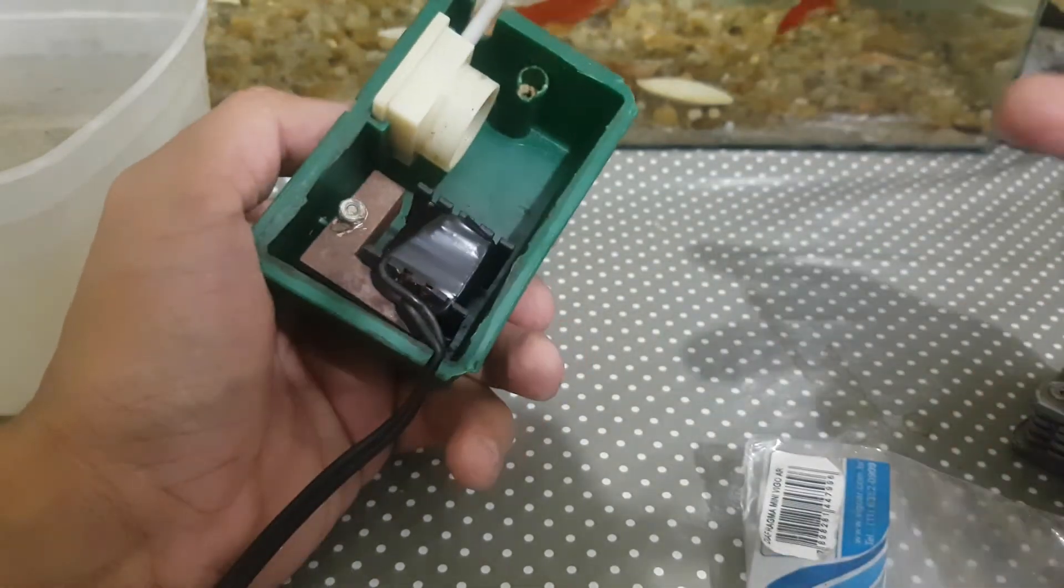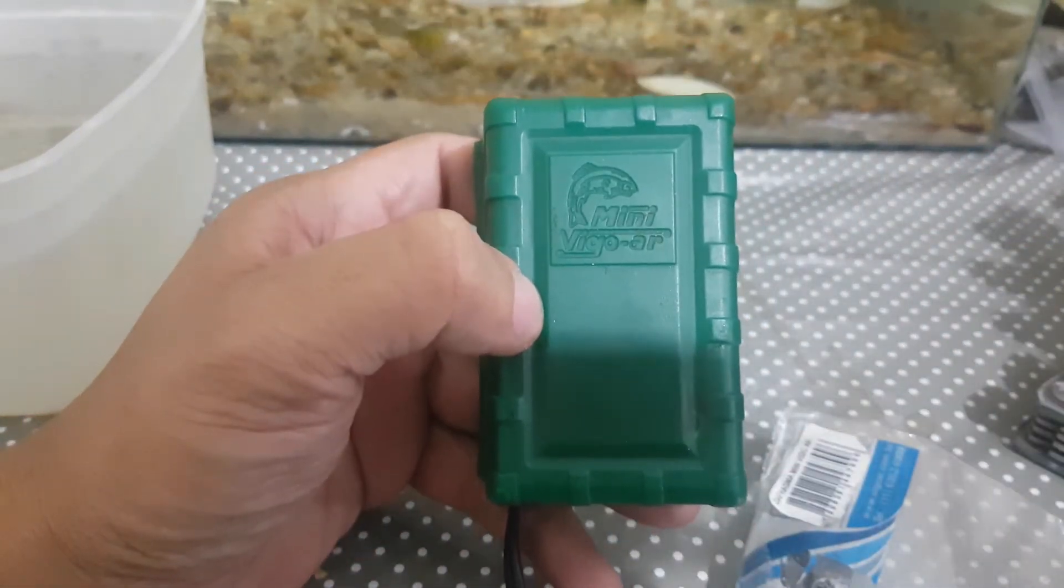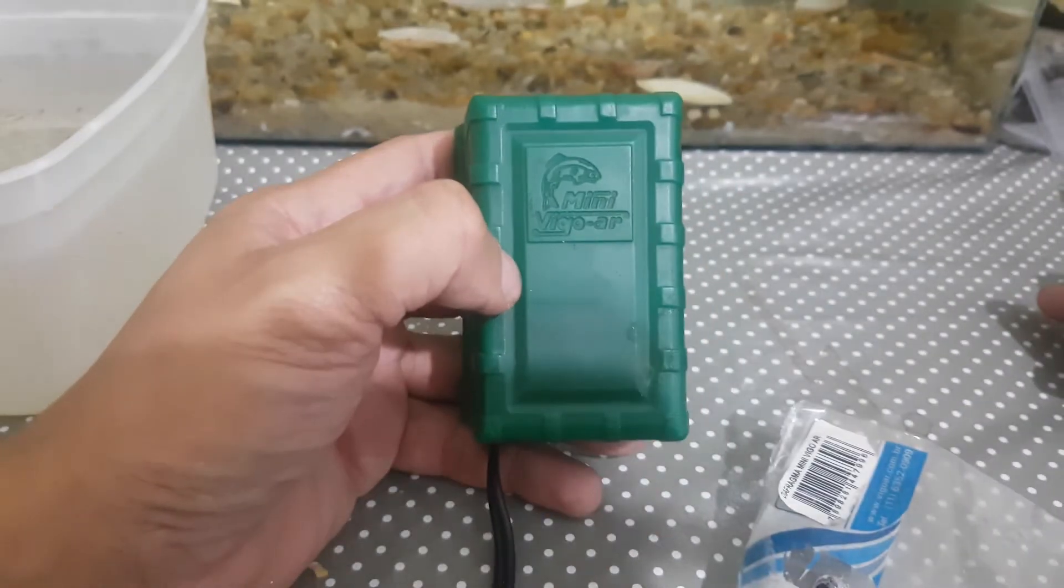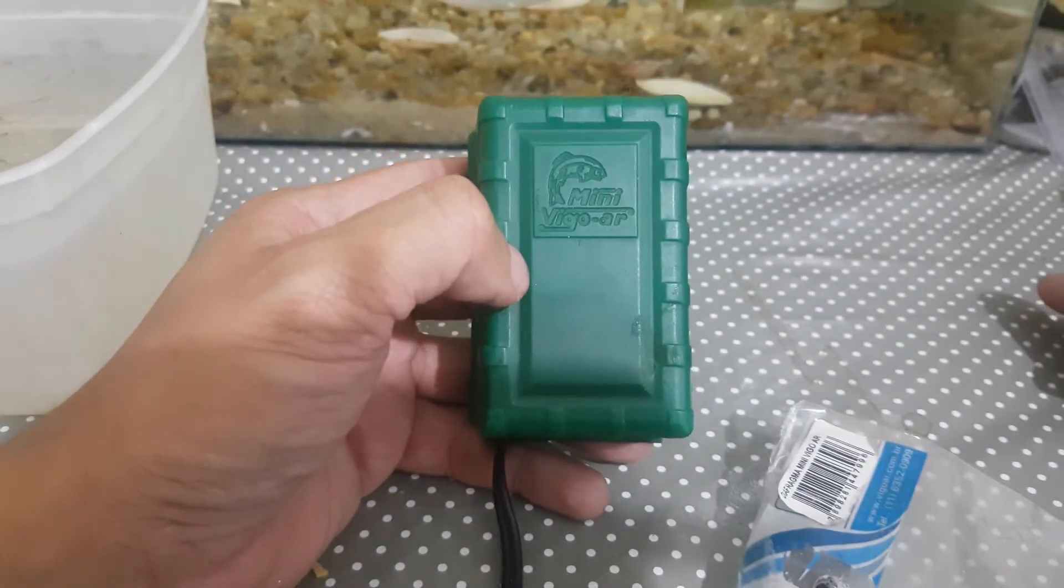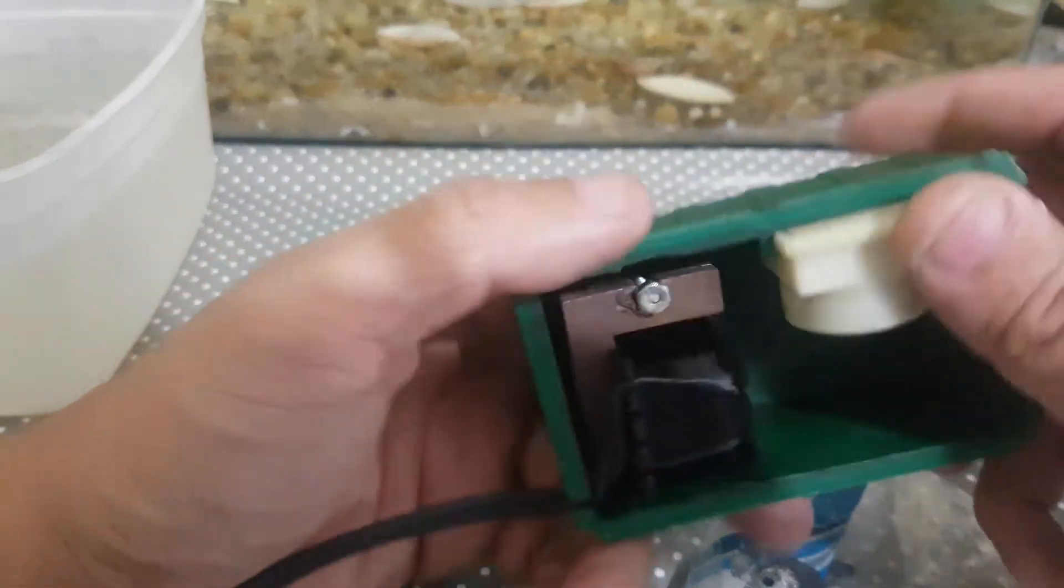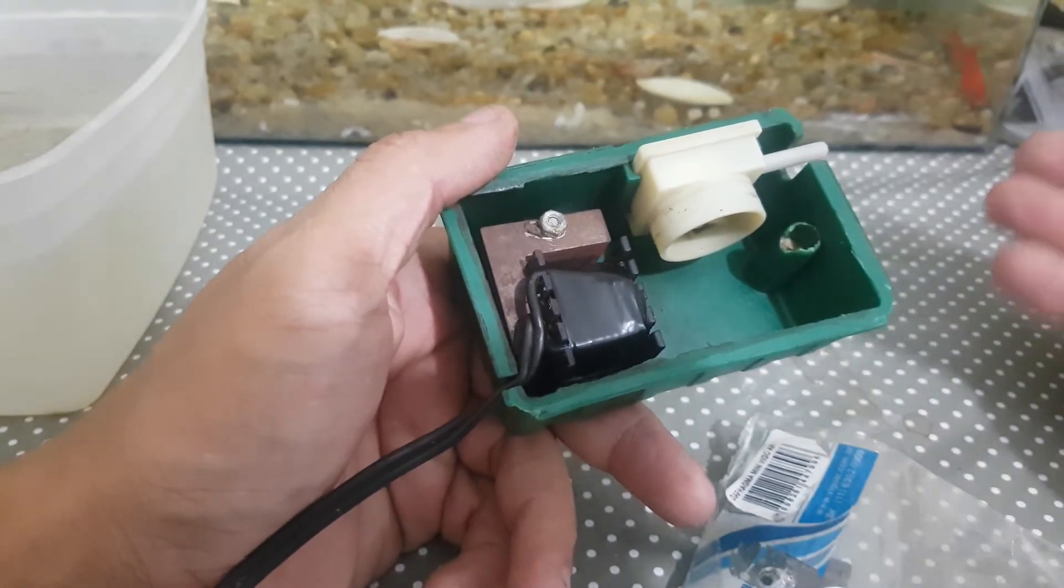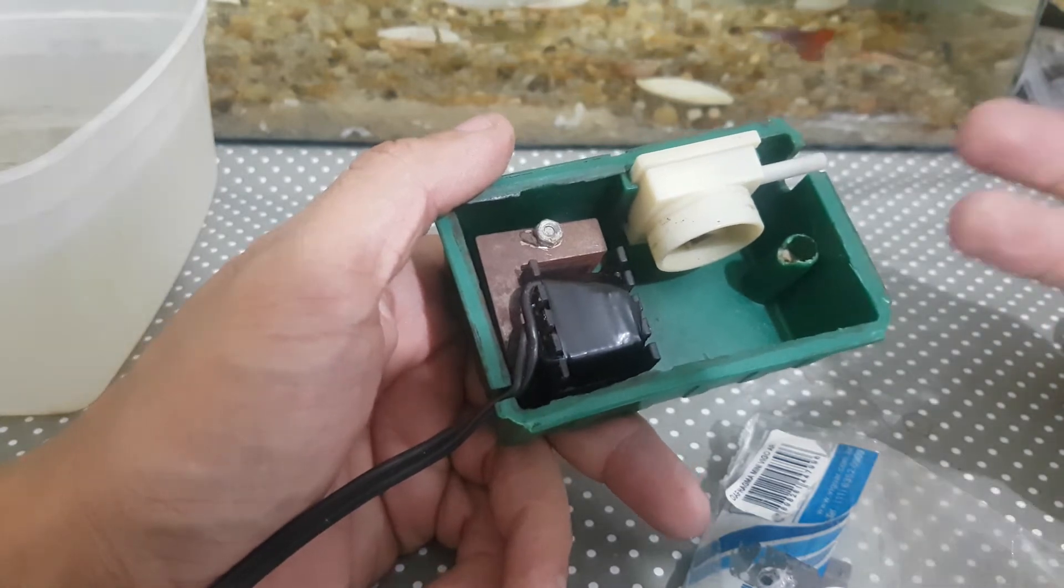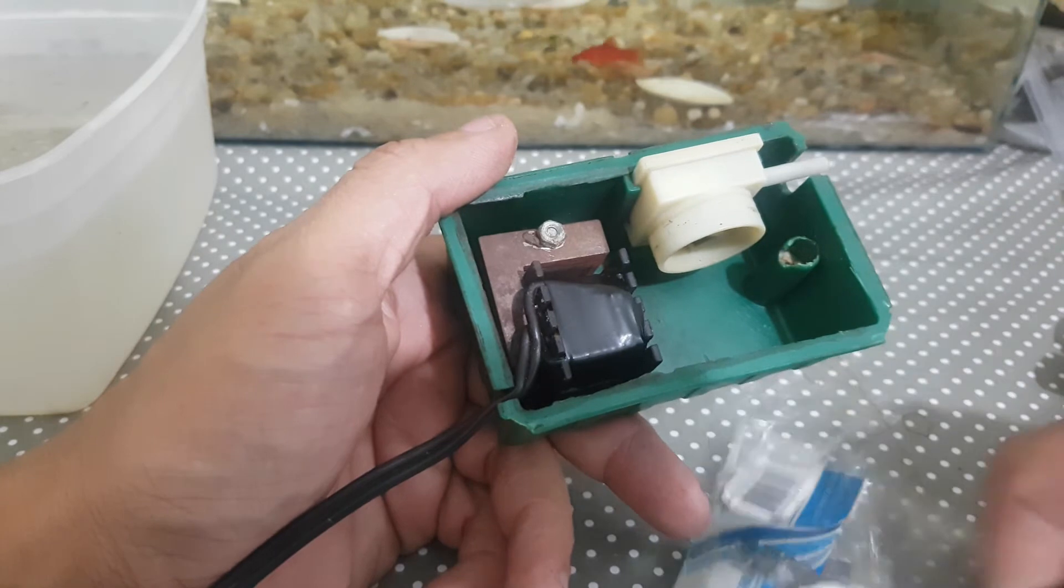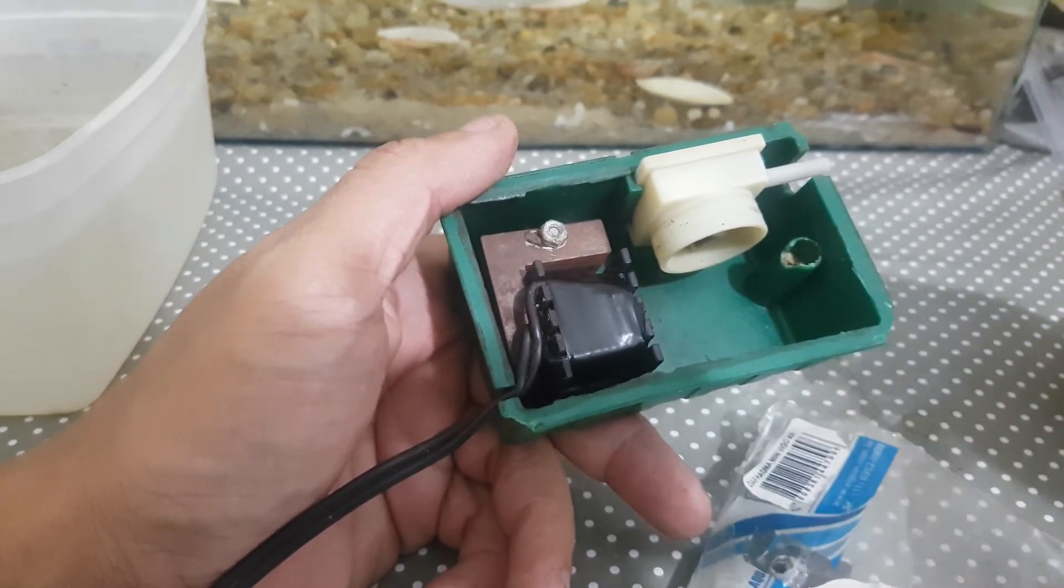Muitas pessoas acabam jogando o compressor fora porque ele parou de fazer a bolha, parou de fazer a oxigenação. Eu tenho essa bombinha aqui, Vigo A, é uma mini Vigo A. Essa bombinha é muito boa, ela está comigo há bastante tempo. Essa bombinha eu não uso ela direto, eu só uso ela para eventualidades. Quando eu tenho algum peixe doente, para uma maternidade, para os alevinos.